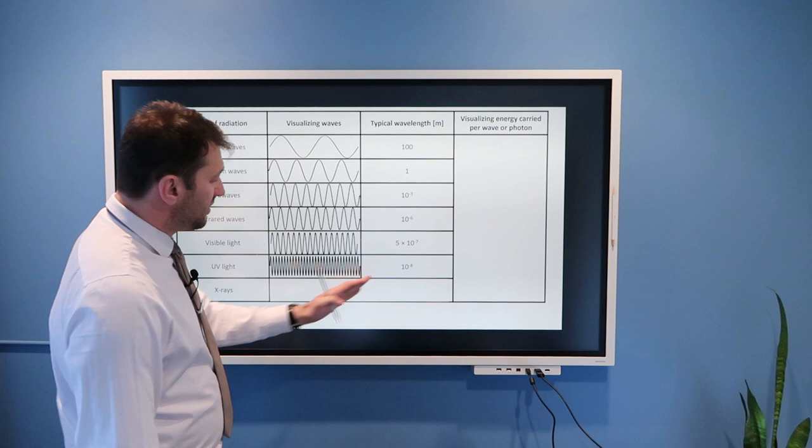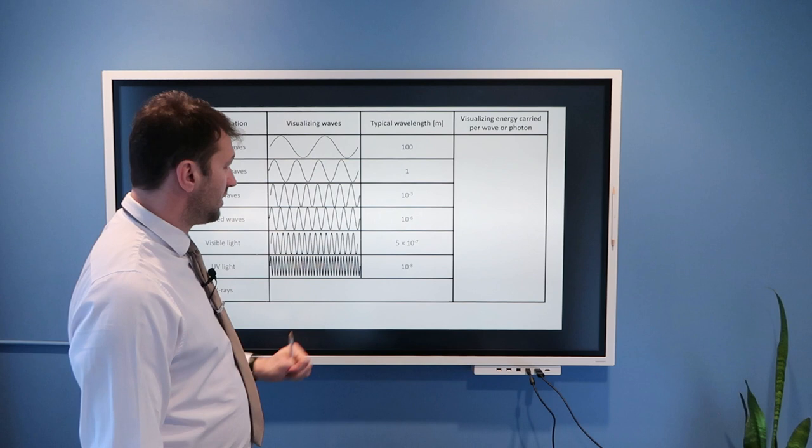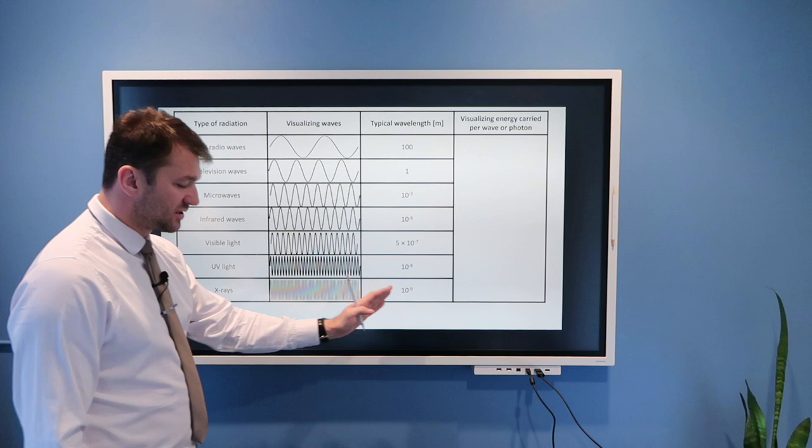UV light, 10 to negative 8, this is already very strong UV light. It can be even weaker than this, in terms of the typical wavelength. But the point is, look how shorter wavelengths these are compared to AM radio waves. And X-rays, even shorter wavelengths, approximately 10 to negative 9 meters.